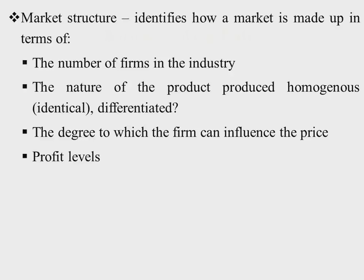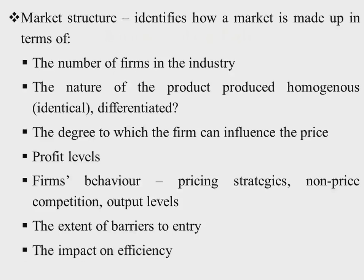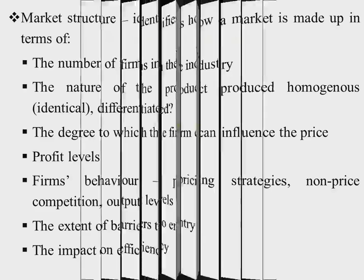We'll look at firms' behavior in terms of the pricing strategy, the non-pricing competition, as well as the output levels. Who determines what price to set and how that price is set is one key distinguishing feature amongst the firms in any given market structure. We also have the extent of barriers to entry — firms where there is free entry and exit, as well as firms where there is no entry at all. Finally, we will look at the impact on efficiency, and all these will help us identify a firm and locate it to the appropriate market structure.